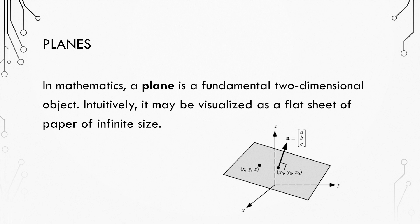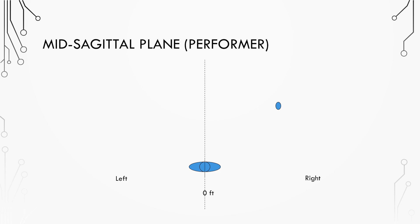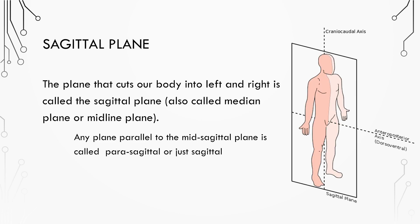You can visualize a plane as a flat sheet of paper of infinite size. The plane that cuts your body into left and right is called the sagittal plane. This bisection can be right down the middle of your body and that's called the mid-sagittal plane, or it can be to one side. Any plane parallel to the mid-sagittal plane is called a parasagittal plane.